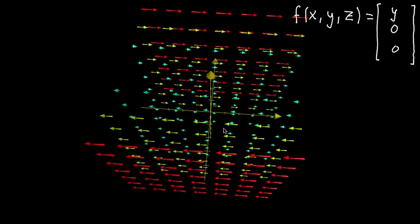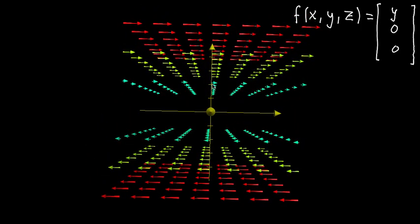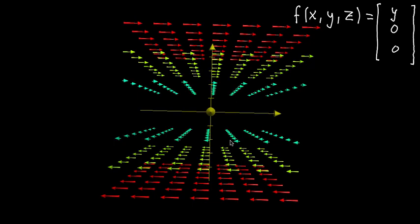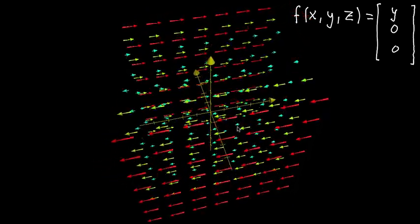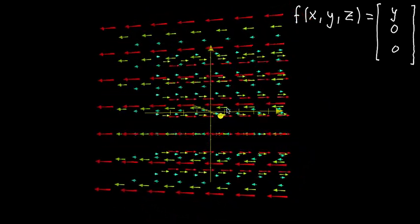And just like with two-dimensional vector fields, when you draw them, you lie a little bit. This one should have a length of one, right? Because when y is equal to one, this should have a unit length. But it's made really, really small. And this one up here, where y is five or six, should be a really long vector. But we're lying a little bit, because if we actually drew them to scale, it would really clutter up the image.